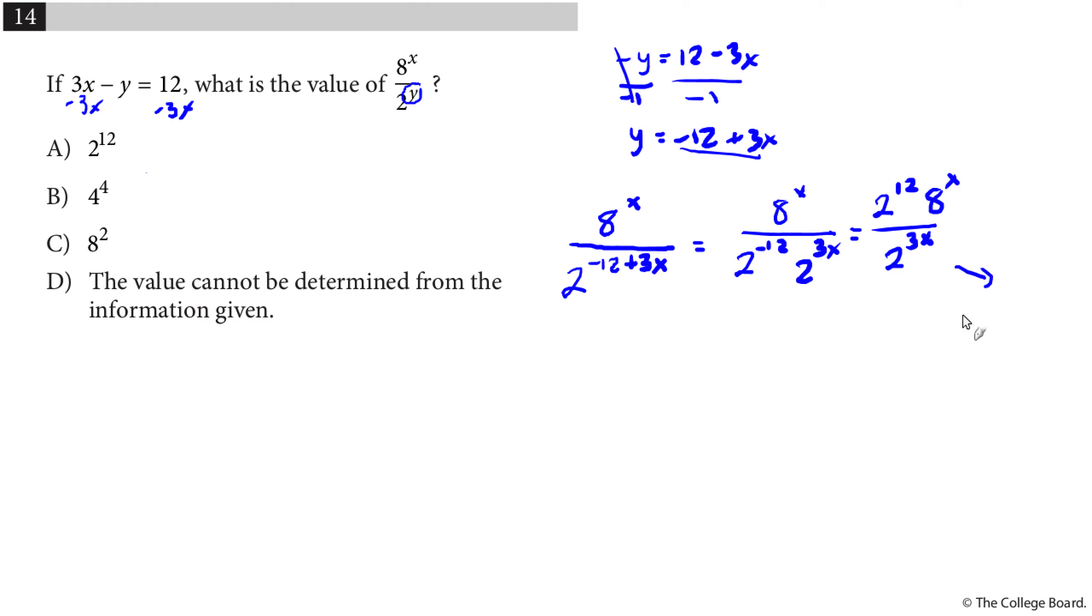And then I can notice that I have 2 to the 3x. So 2 to the 3x is the same thing because of power of a power as 2 to the 3 to the x. But 2 to the 3 is 8, so this will be 8 to the x. And pulling that back in, I will see that I have 2 to the 12, 8 to the x over 8 to the x. And I'm left with 2 to the 12. So kind of involved. They're exponent properties that many kids learn somewhere between 8th grade and sophomore year, but it really sort of steps it up a little bit.